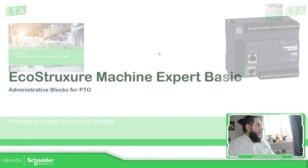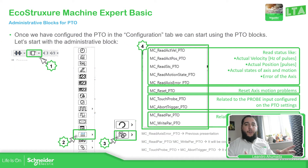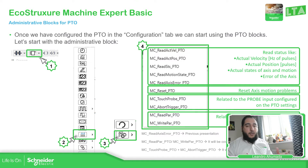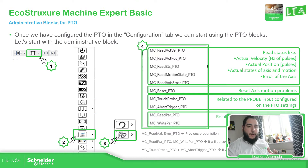Once we have already configured the PTO as we saw in the previous videos, we are able to start working with the blocks for the PTO. What I want to show you in this part is the administrative blocks. We are not going to explain how to make the movements — I just want to show you the blocks that allow you to see errors, see the actual position, or velocity, as you can see here on the screen.